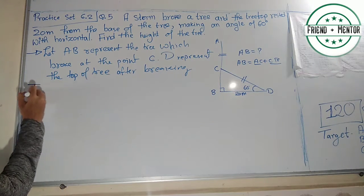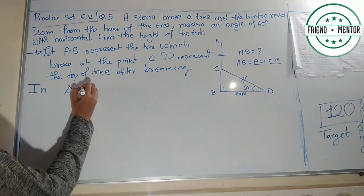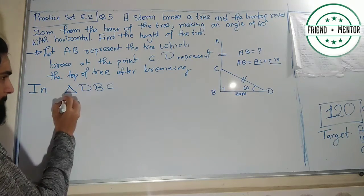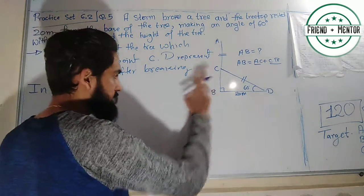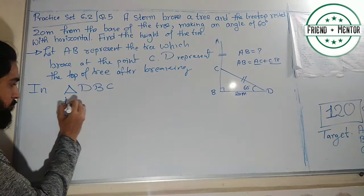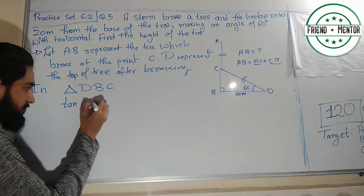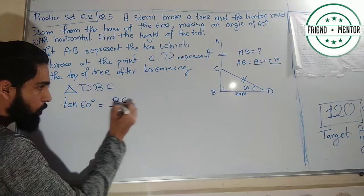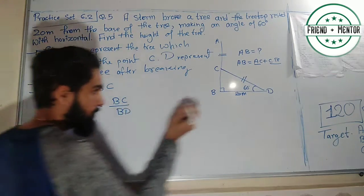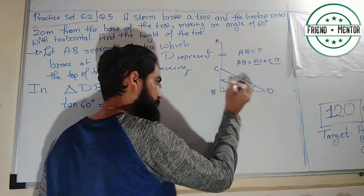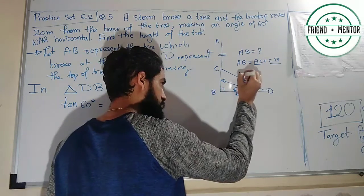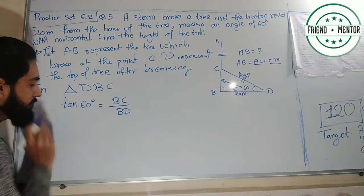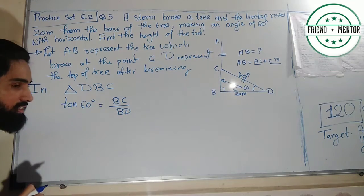In triangle DBC, we know the angle at B is 60 degrees. We need the opposite side BC, and the adjacent is known. Tan of 60 degrees equals opposite upon adjacent, that is BC upon BD. BD is the horizontal distance of 20 meters, and CD is the hypotenuse.